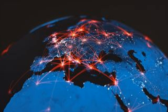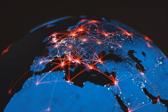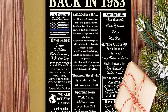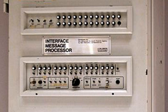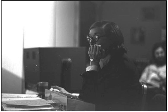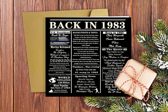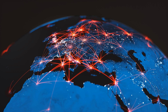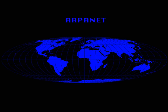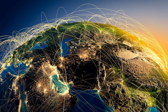The ARPANET had a major impact on the development of the internet as we know it today. The network pioneered many of the key technologies and standards still used by the internet today, including packet switching, TCP/IP, and email. These innovations helped to shape the modern internet and laid the groundwork for the creation of new technologies like the World Wide Web and e-commerce. In addition, the ARPANET demonstrated the potential of computer networks to facilitate collaboration and information sharing across different organizations, something that is now a fundamental part of the internet's architecture. The ARPANET also helped to create a culture of openness and cooperation among computer scientists and researchers, which has been essential to the development of the internet over time.